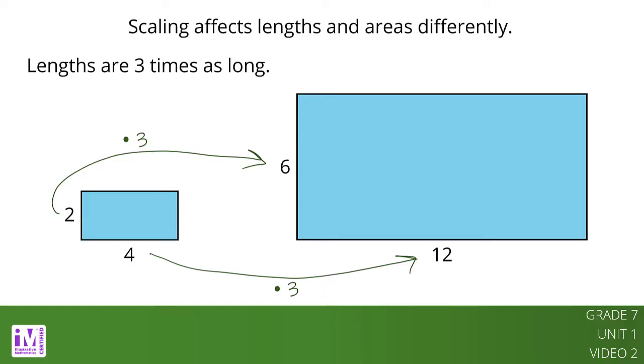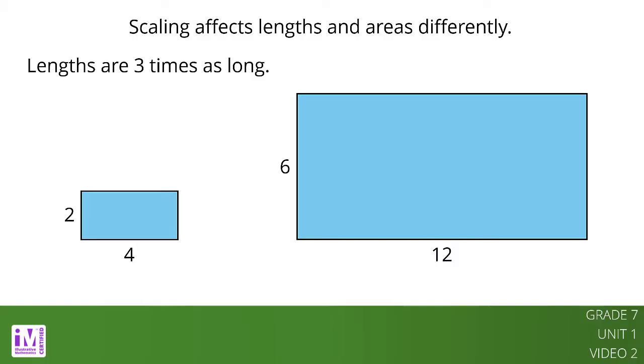But what about the area? The area of the original rectangle is 8 square units because 2 times 4 equals 8. The area of the scaled copy is 72 square units because 6 times 12 equals 72. This is 9 times the area of the original rectangle.